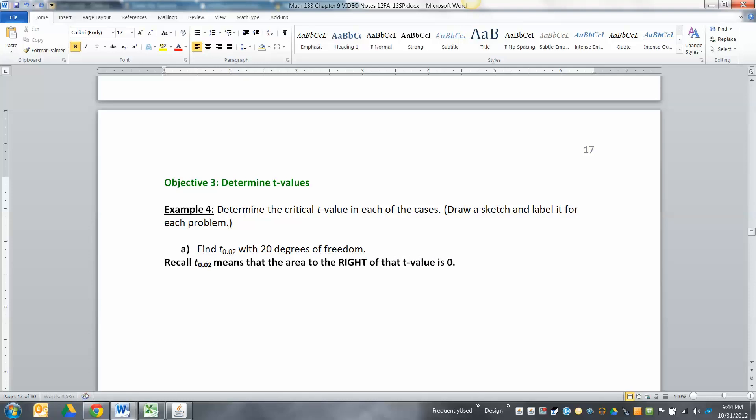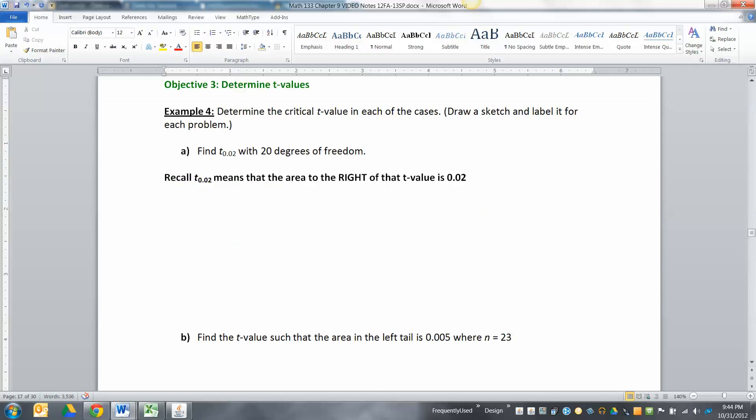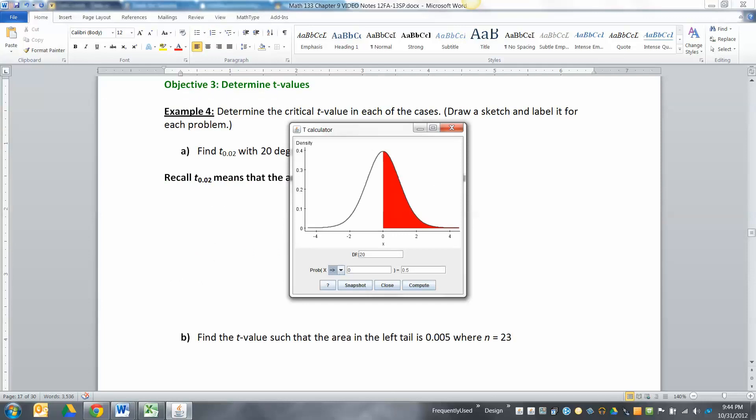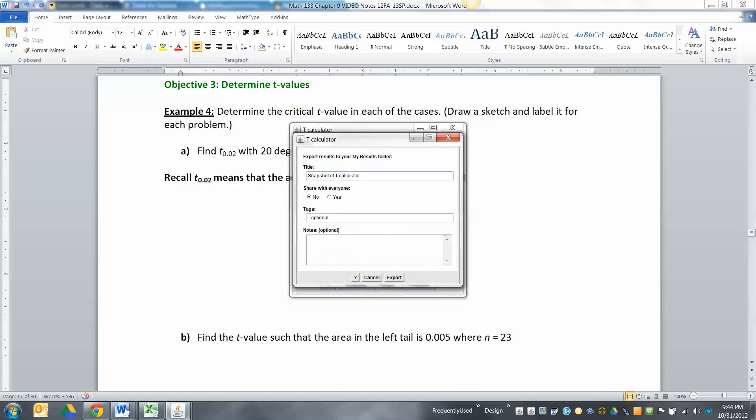I'm going to hit 0.02 enter, and there it is. You can see it's 2.19. I'm going to do my old snapshot thing - this is 9.2 example 4a export.